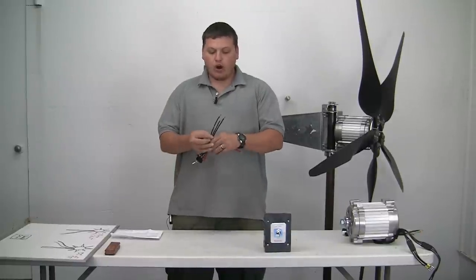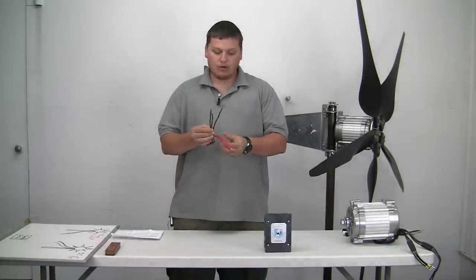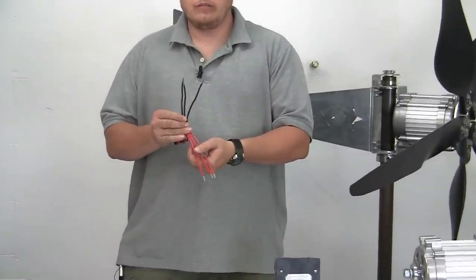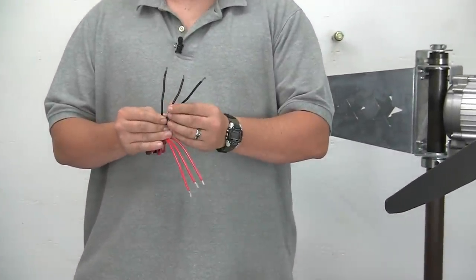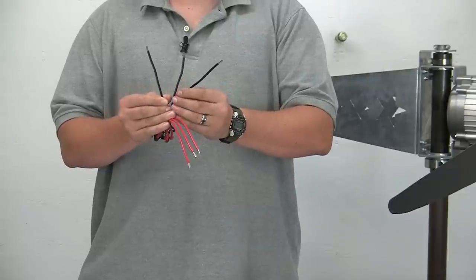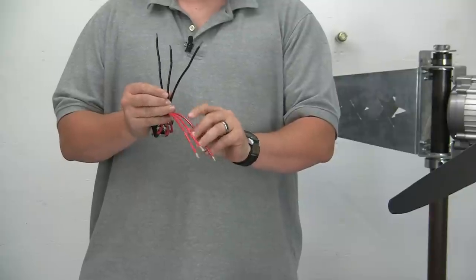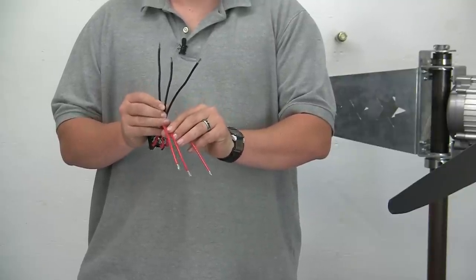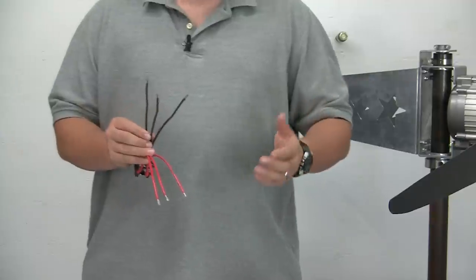There's three input wires and three output wires. For a three-phase AC wind turbine, you just connect the three wires to each one of them, doesn't matter which order it goes in. And then you connect the three black wires going to your rectifier. And then you continue your wiring from there.